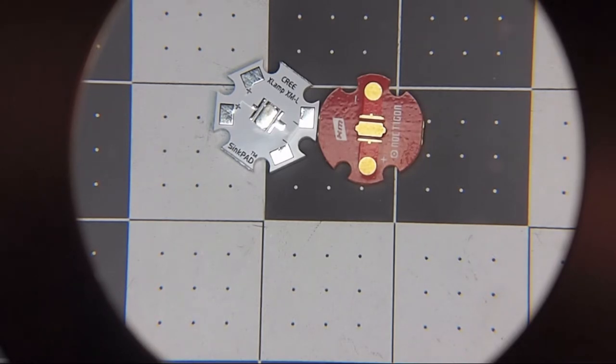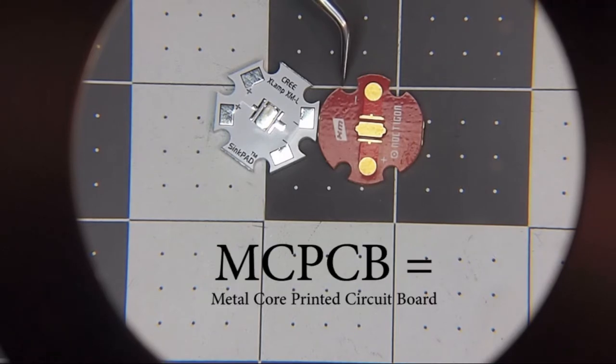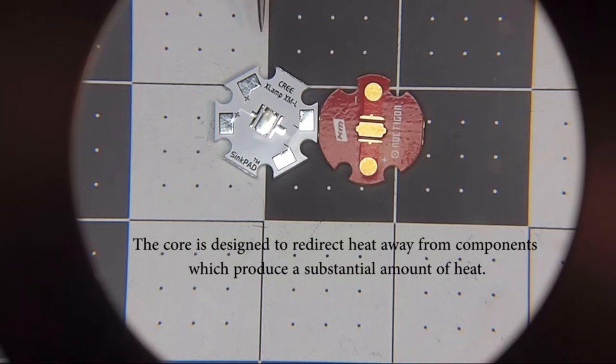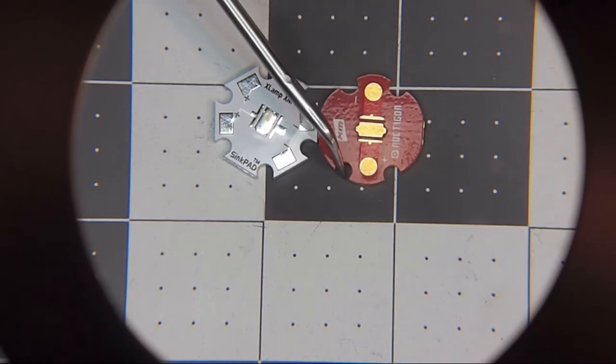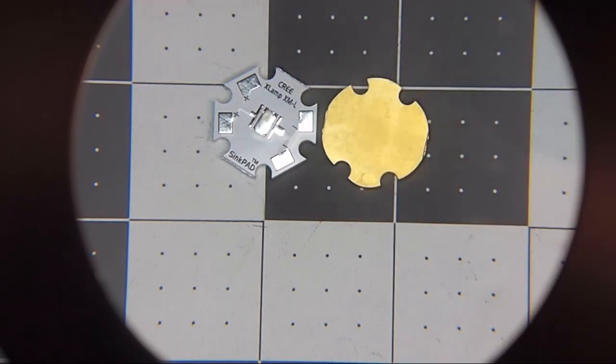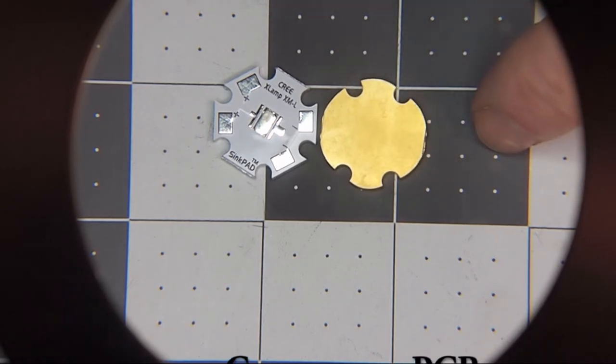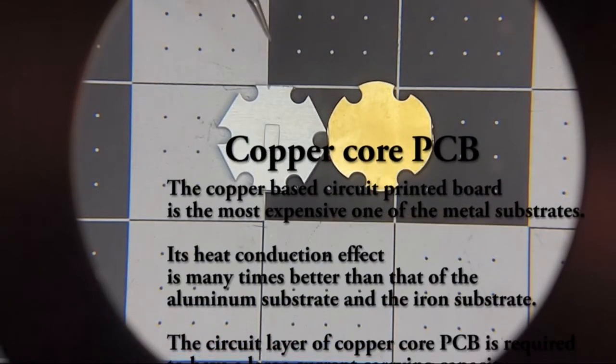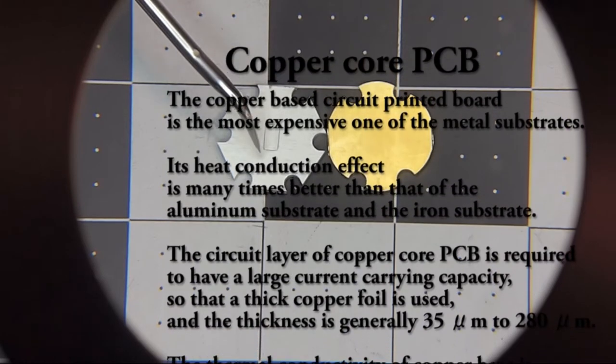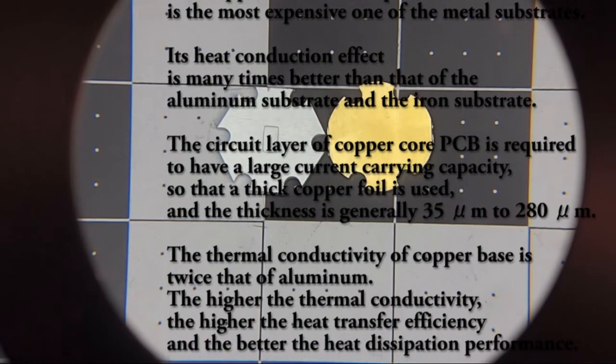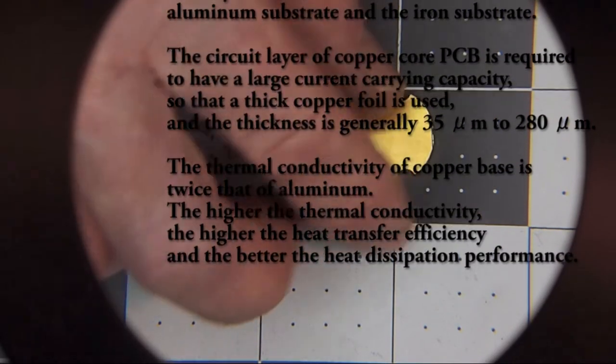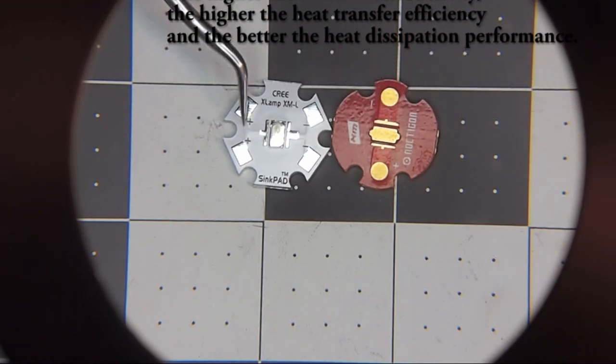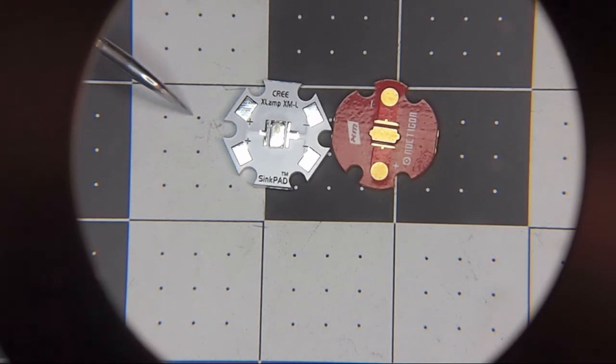So what we're going to start with first is looking at what's called the MCPCB. This is what the LED gets mounted on and there are two types that we're looking at right now. This red one has a copper substrate on it, and as we know copper is a very thermally efficient material for transferring heat. This one over here, which is more common in the budget flashlights, is an aluminum MCPCB. It is not as thermally efficient as the copper. Aluminum is a lot cheaper, so these are cheaper to produce and this is what you're going to be putting into an economic low-cost budget flashlight.